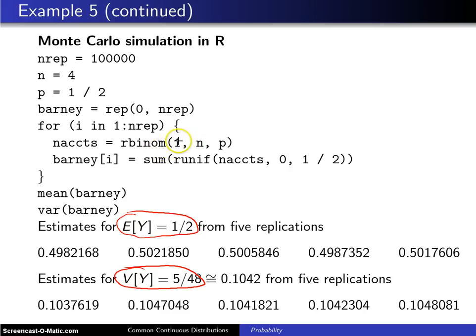And we will generate one of those with n equals four and p equals one-half. That will generate you a zero, one, two, three, or four, and then depending on how many accounts generate Barney some revenue.